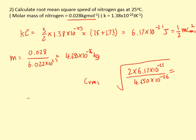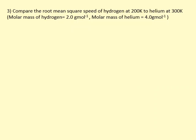Compare the root mean square speed of hydrogen at 200 kelvin to helium at 300 kelvin. The molar masses are given. I could calculate the crms of hydrogen and helium separately and then compare them, but I'm just going to use a proportionality argument here.